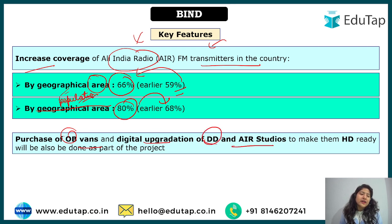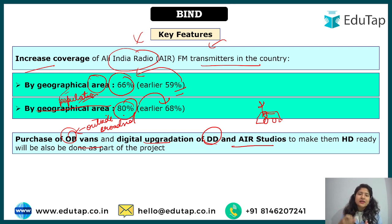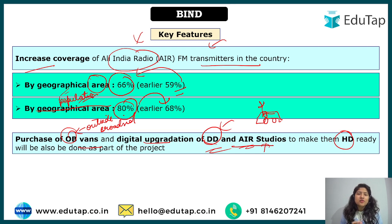Another key feature is the purchase of OB vans — Outside Broadcasting vans. These are vehicles equipped with dish antennas and a proper studio inside, allowing news channels to go anywhere and directly broadcast. More OB vans will be purchased to increase content coverage. Additionally, digital upgradation of Doordarshan and All India Radio studios will be done so that the quality of broadcasting becomes HD, that is, High Definition.